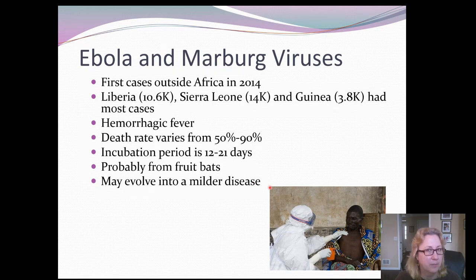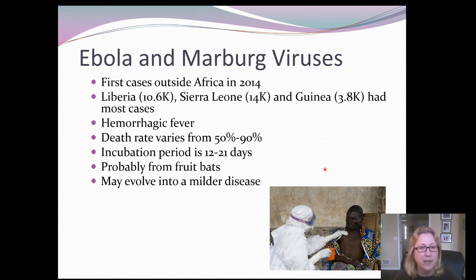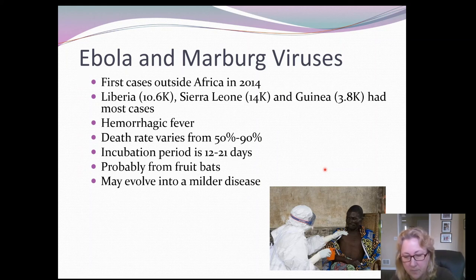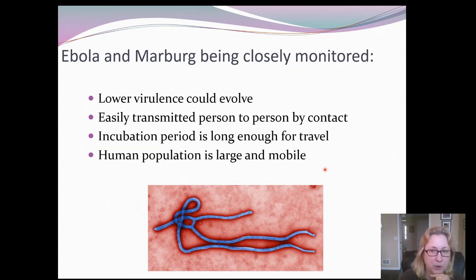One concern is that Ebola might evolve into a milder disease. Especially during this first big epidemic, as the virus was being passed from person to person, mutations were occurring. The viruses being selected for are ones that cause milder symptoms, because the milder a person's symptoms, the less likely they are to realize they're sick and infectious — so they pass those milder viruses to more new people. Lower virulence would be of significant concern because it could spread to many more people. A more recent smaller Ebola epidemic was stopped much more quickly.